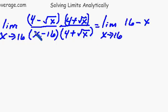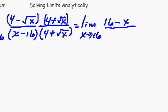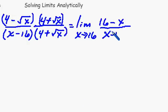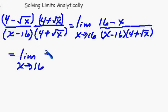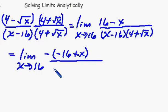And the bottom part, I'm just going to rewrite. We have x minus 16 times 4 plus the square root of x. Now you see we have 16 minus x in the top and x minus 16. What we're going to do is factor out a negative out of the top so we have something in the bottom that looks just like it. If I pull a negative out of here, it's just a little trick that you learned. And it's all over x minus 16, 4 plus the square root of x.